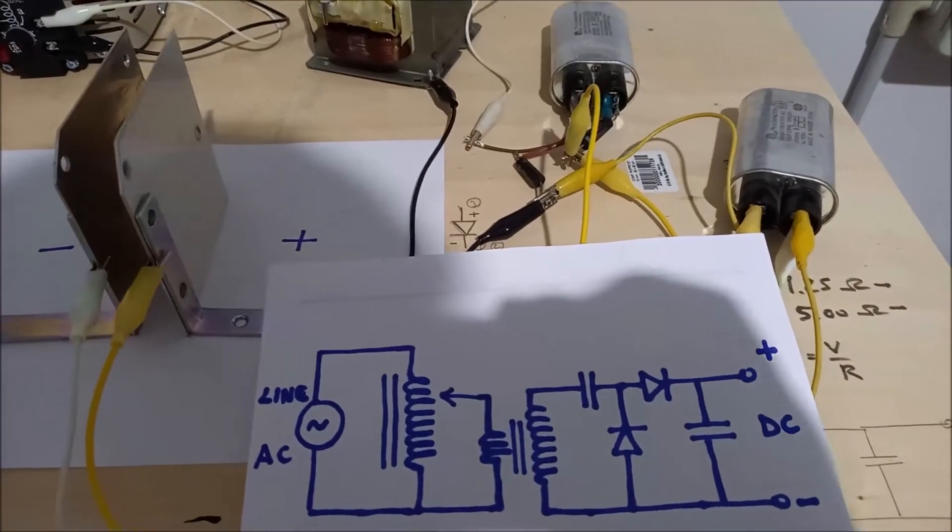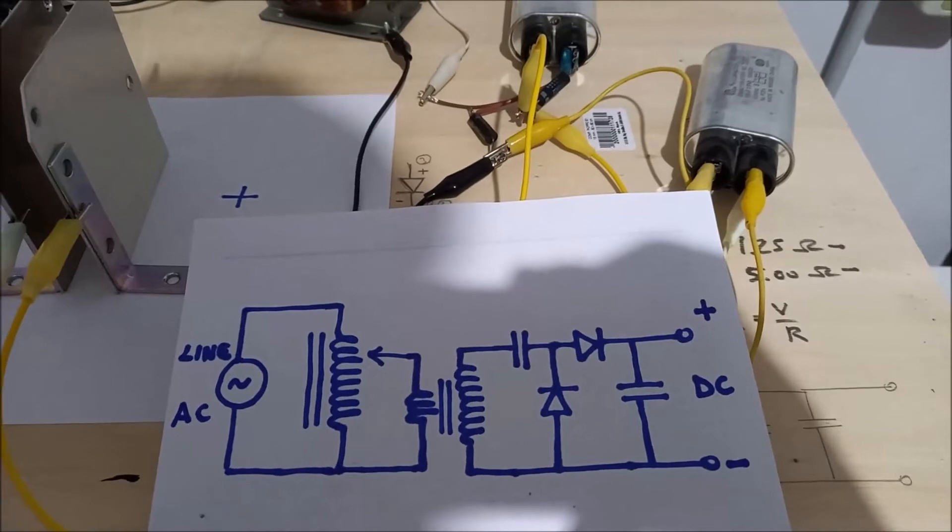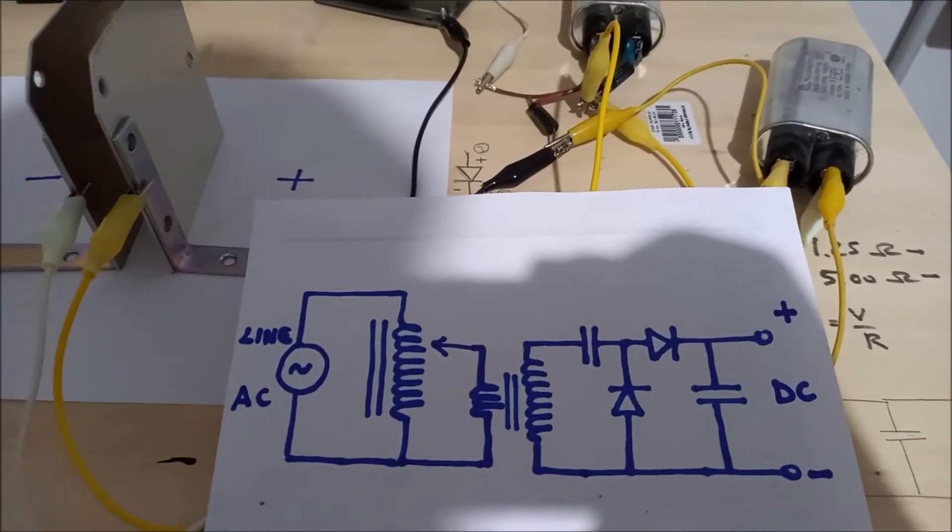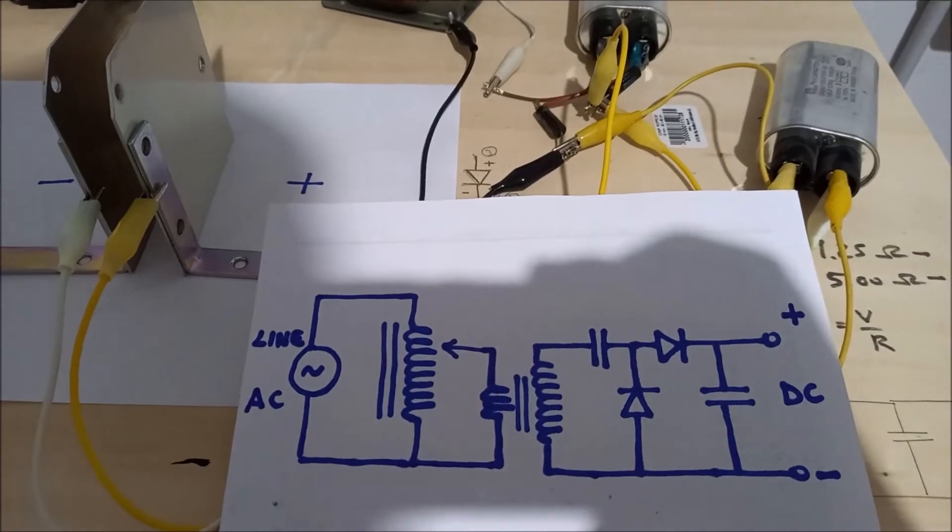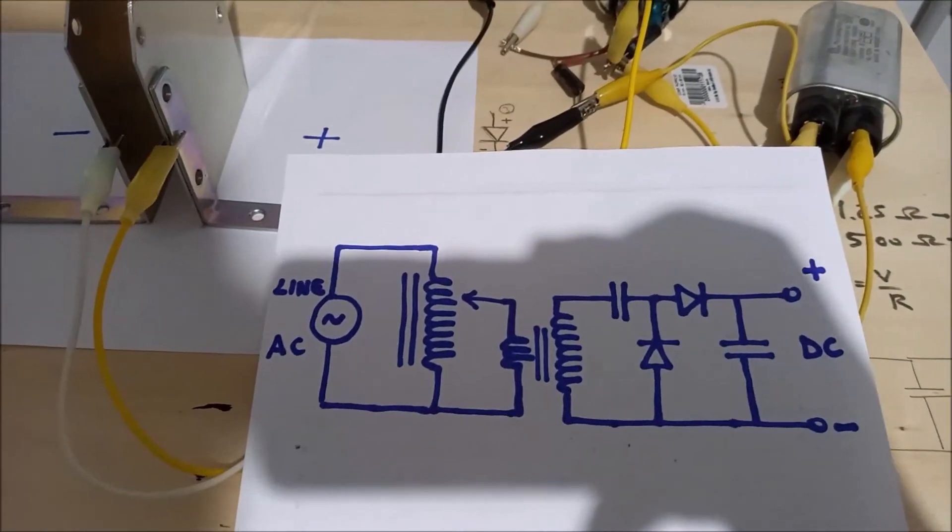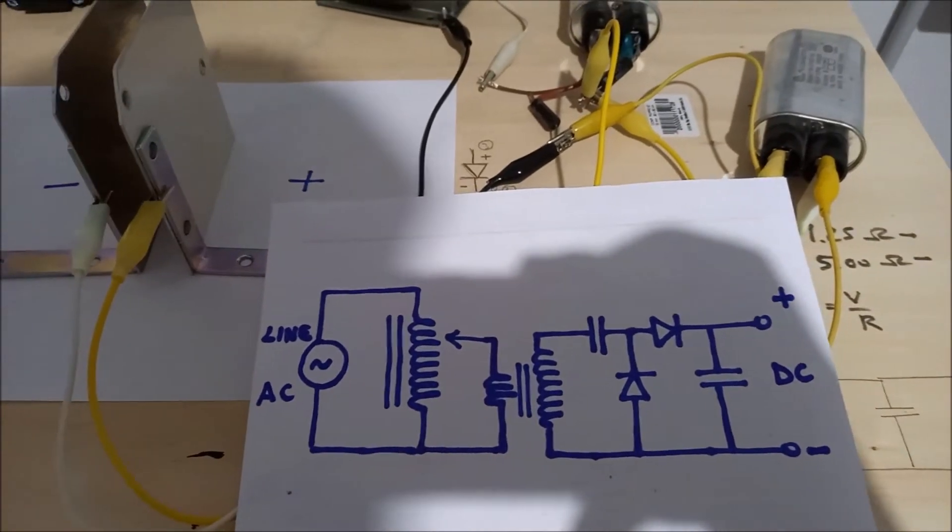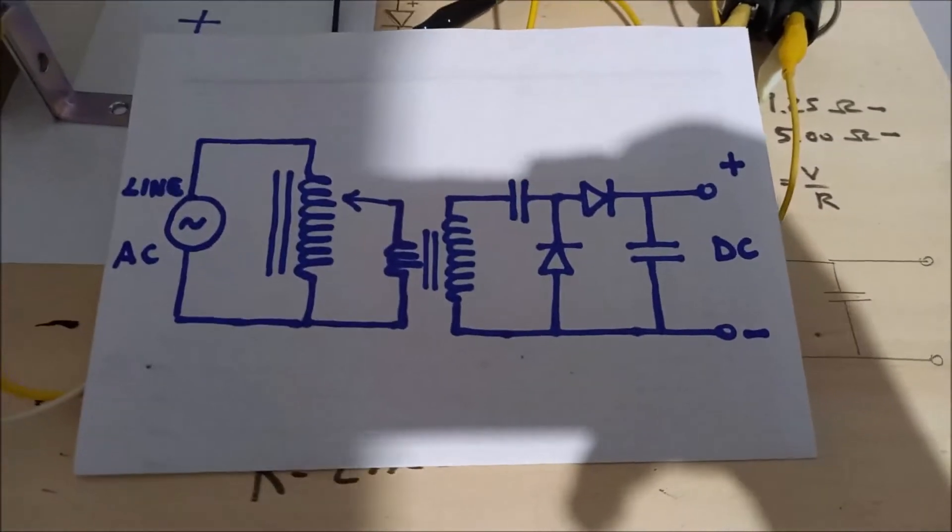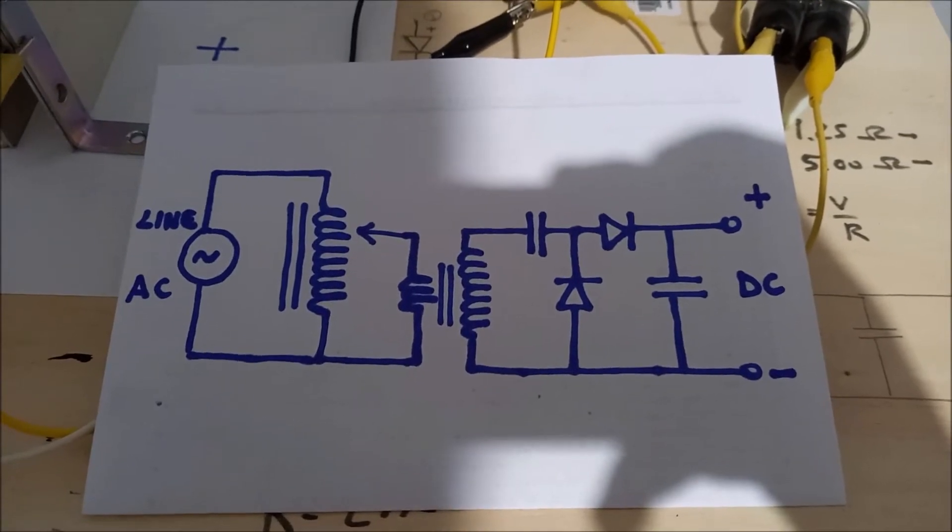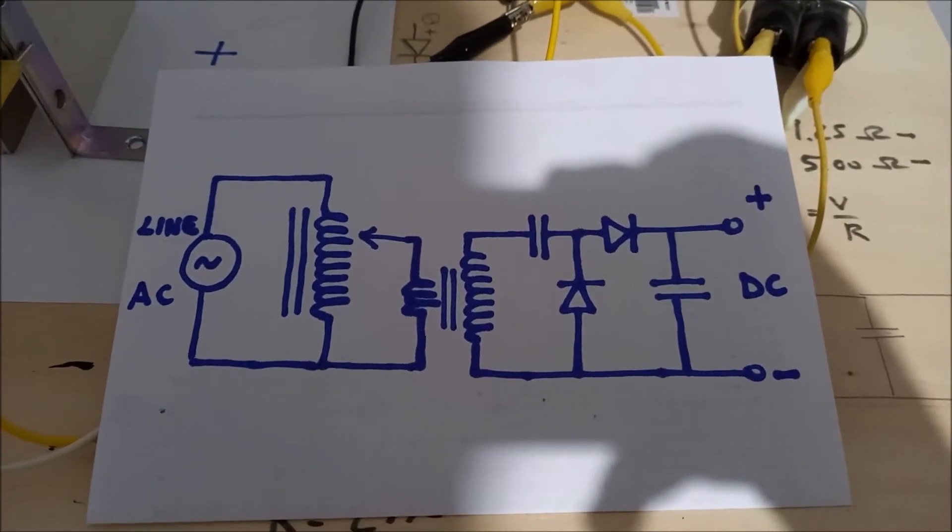Hello guys, we are back with a new experiment. Today we're going to see the effect of a pretty high electric field on the flame of a candle. Let me explain how we are going to achieve this high electric field. This is the circuit diagram. We have our input, the line voltage AC, then we have a VARIAC.